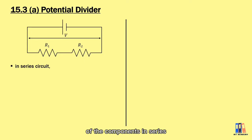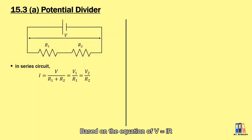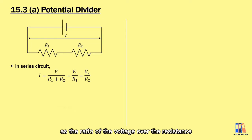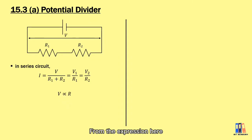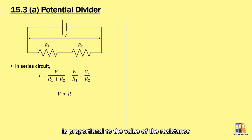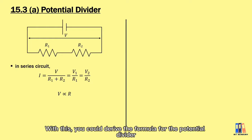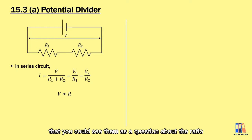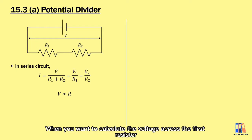Based on the equation V = IR, we can calculate the current I as the ratio of the voltage over the resistance. From this expression, you can see that the voltage across each of the components is proportional to the value of the resistance. With this, you can derive the formula for the potential divider.